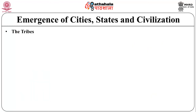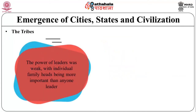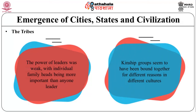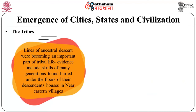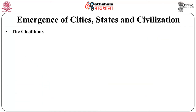The next stage is that of a tribe. A slightly larger, more complicated form of social organization called the tribe can be inferred from the archaeological record in the Near East. The tribe was larger than a band, made up of a group of families related by common descent or membership in kinship-based groups such as clans or lineages. The power of leaders was weak, with individual family heads being more important than any one leader. Kinship groups seem to have been bound together for different reasons in different cultures. Lines of ancestral descent were becoming an important part of tribal life. Evidence includes skulls of many generations found buried under the floors of their descendants' houses in Near Eastern villages. There was little or no stratification and division of labour was still largely by age and sex.